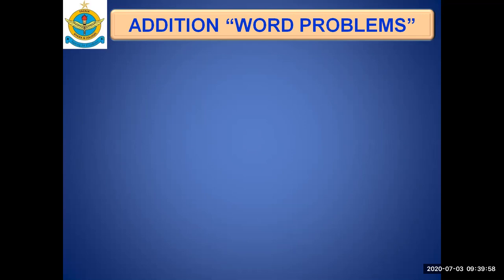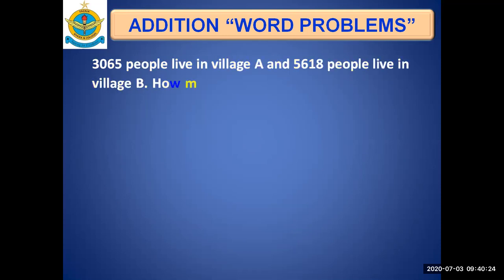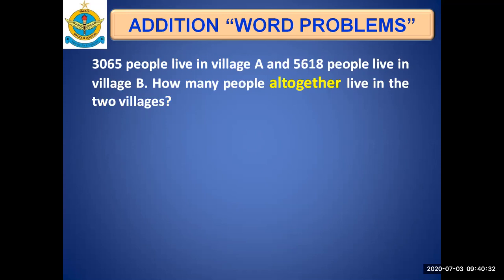These are the words that tell us we have to do addition. There are situations where we don't have a sign — these are word problems, also called story sums. For example: '3065 people live in village A and 5618 people live in village B. How many people all together live in the two villages?' The keyword here is 'all together,' which tells us we have to do addition.